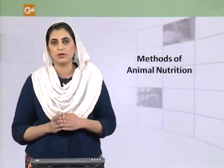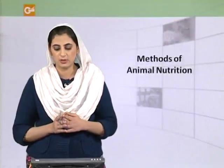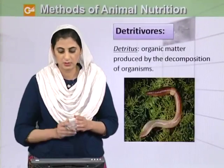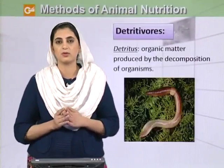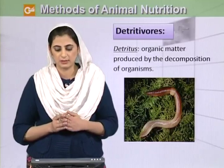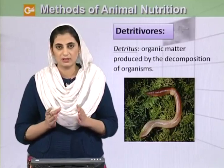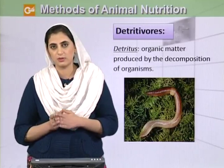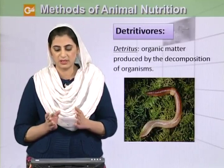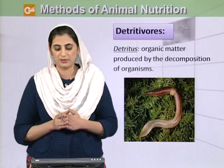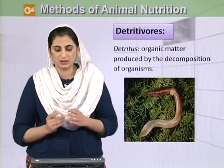In this module, we will discuss various methods of animal nutrition. Detritivores are those organisms which live on detritus. Detritus is organic matter which is produced by the decomposition of organisms. Earthworm is an example of a detritivorous organism.